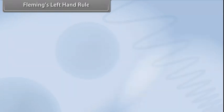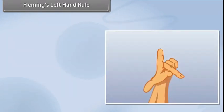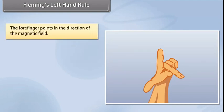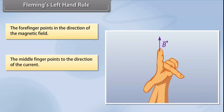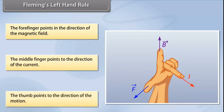Fleming's left-hand rule is a mnemonic to represent three directions. You need to stretch your thumb, forefinger, and middle finger of your left hand. Each finger points to a specific direction. The forefinger points in the direction of the magnetic field. The middle finger points to the direction of the current. The thumb points to the direction of the motion. This is Fleming's left-hand rule.